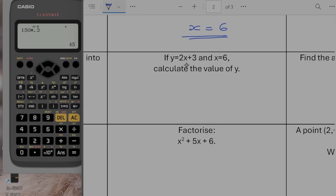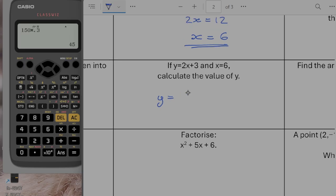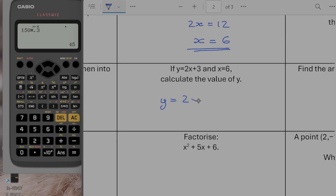If y is equal to 2x plus 3 and x is equal to 6, calculate the value of y. So y is going to be equal to 2 lots of 6, plus 3. So that's going to give us 12 plus 3. That's going to give us 15 for y.